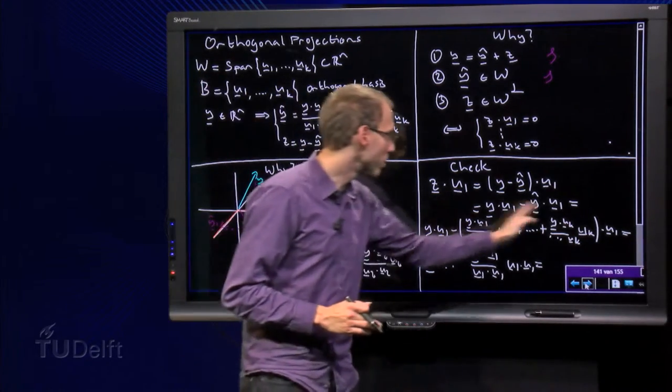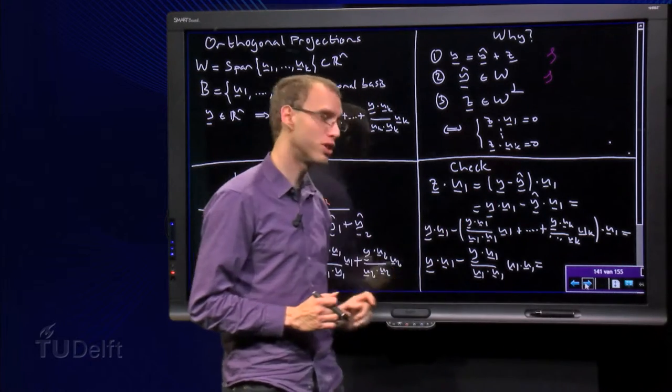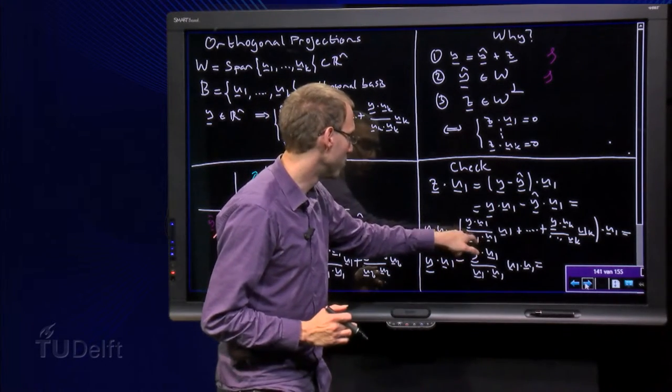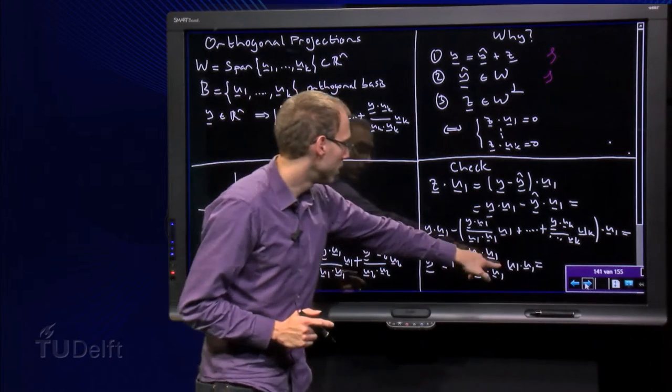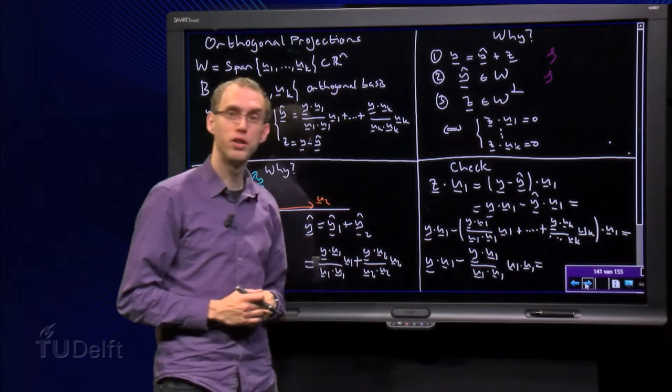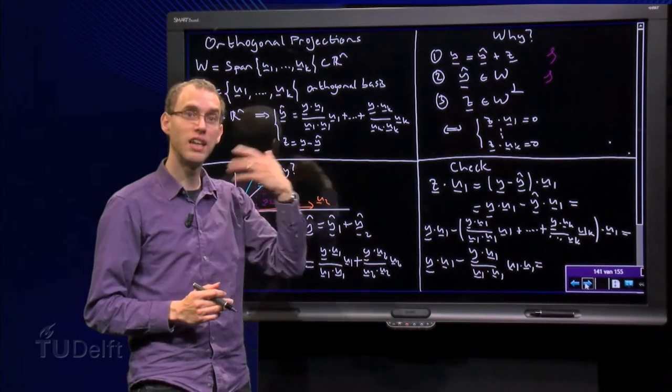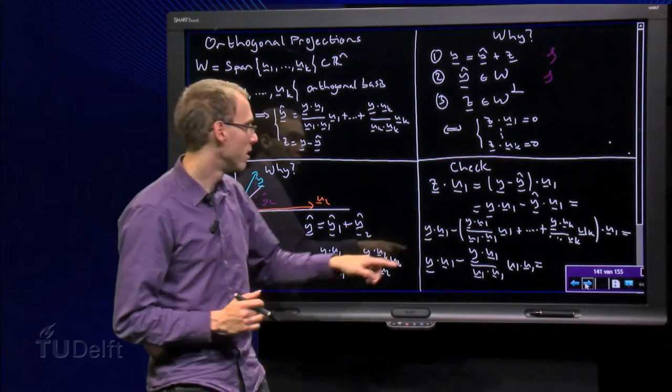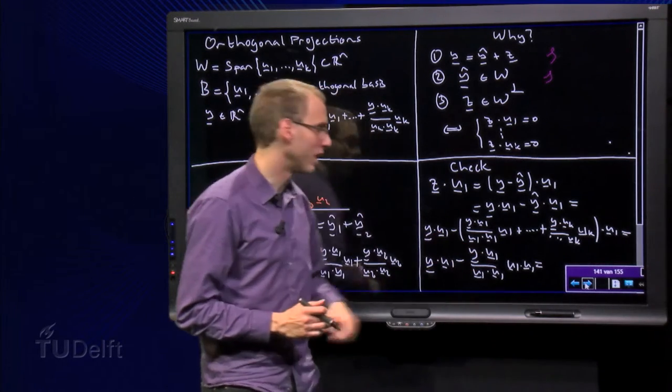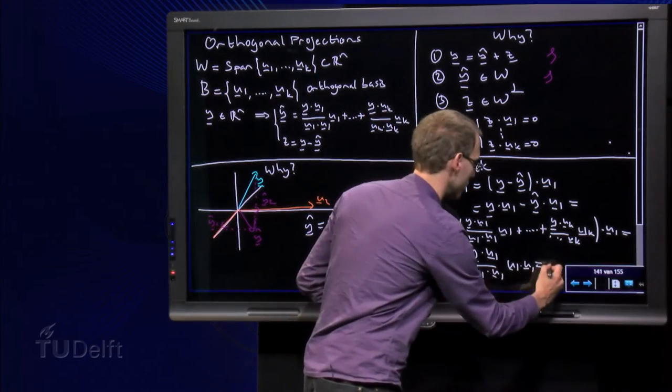So all terms over here drop out except for the first one where we get y inner product u1 over u1 inner product u1 times u1 inner product u1. But then you see u1 inner product u1 over u1 inner product u1 is just the length of u1 squared divided by the length of u1 squared, that's the same. So we are left with y inner product u1 minus y inner product u1 equals zero.